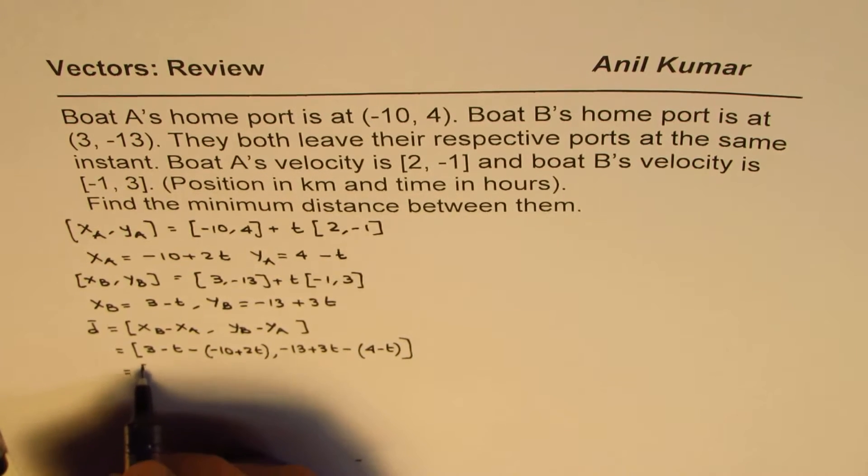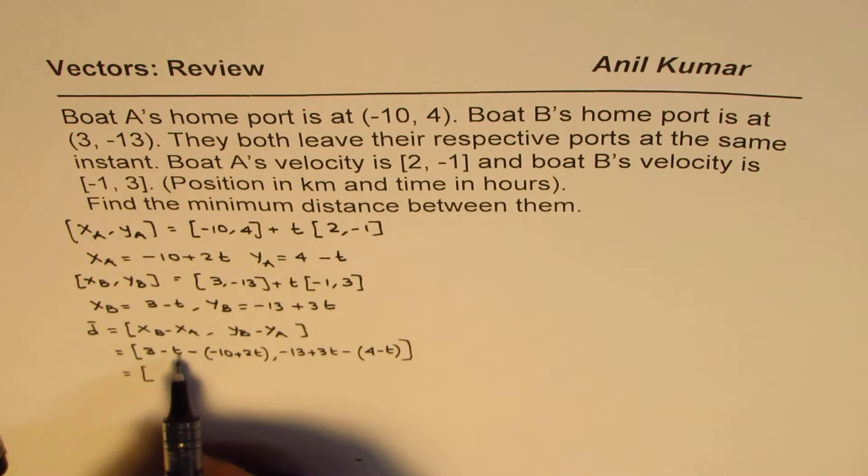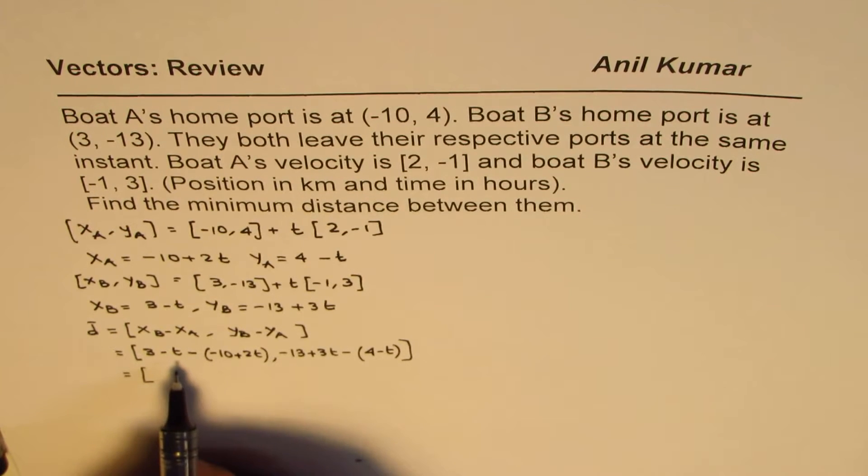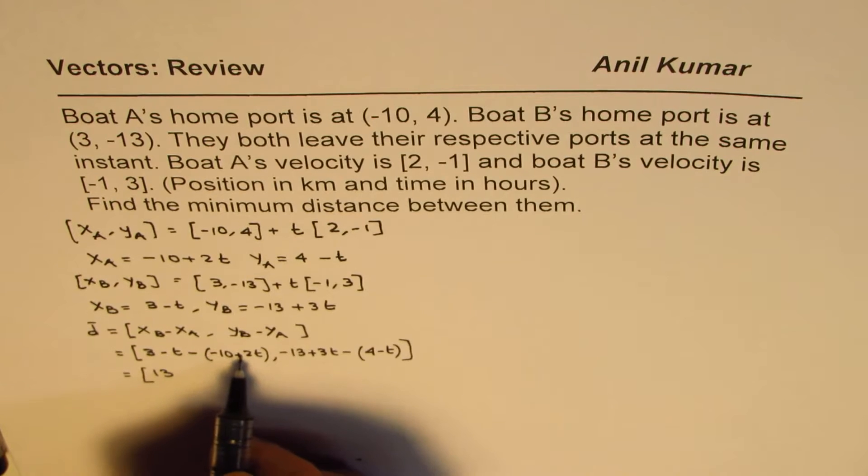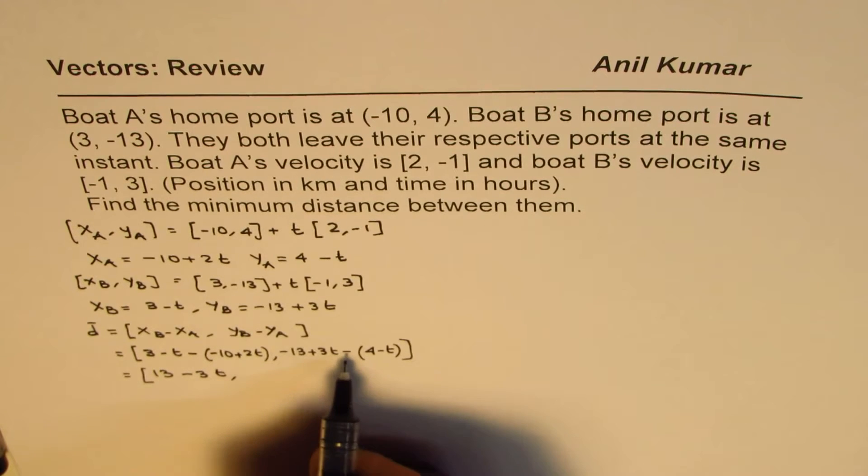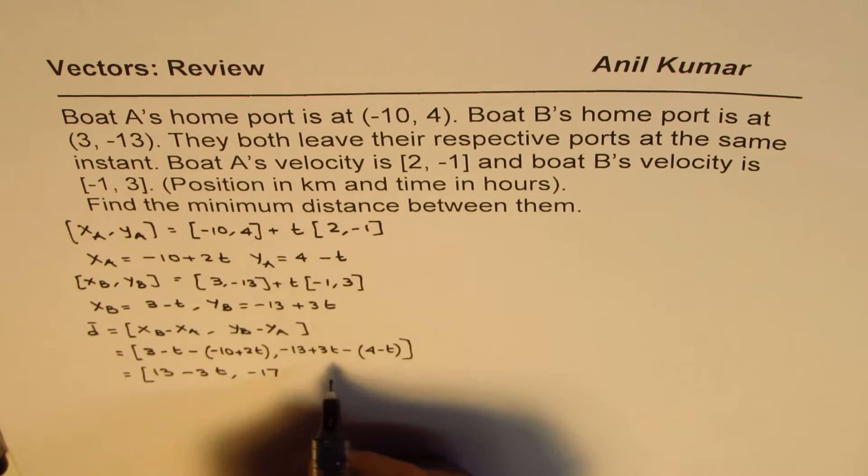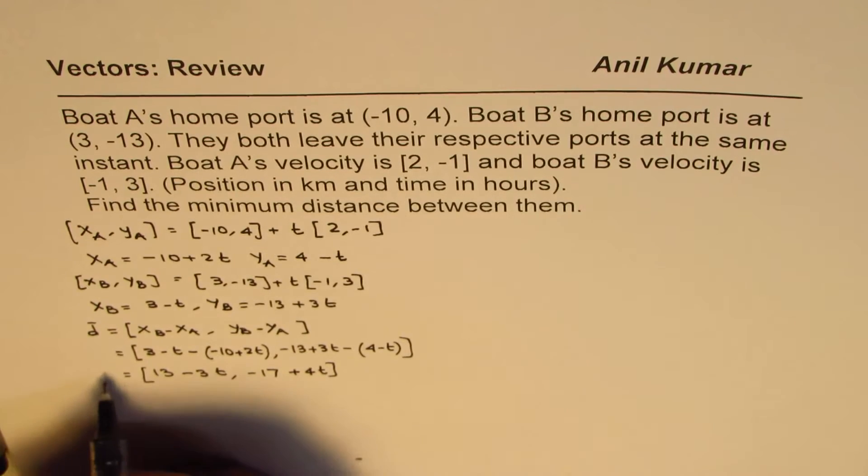Let's simplify this. 3 - t, minus minus becomes plus, so 3 + 10 is 13, minus t plus minus which means minus 3t. -13 and -4 makes it -17. 3t minus minus becomes plus, so we have plus 4t. So that is the displacement.